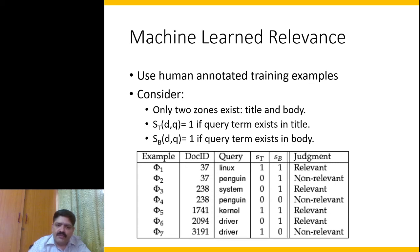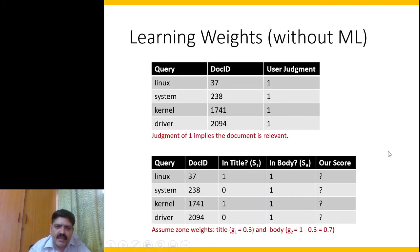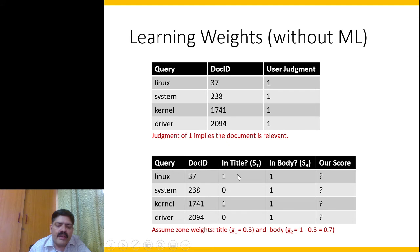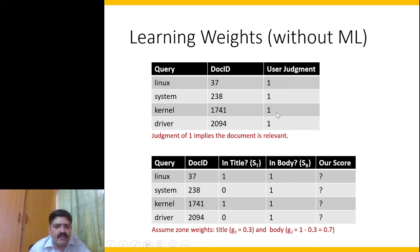But do we really need machine learning for this? In simple examples, we might be able to find the weights ourselves. For example, given training data where query 'Linux' and document ID 37 have a user judgment of 1 (relevant), we can run a program to check whether 'Linux' appears in the title (sₜ=1) or body (sᵦ=1) of each document, and combine this with user relevance judgments.